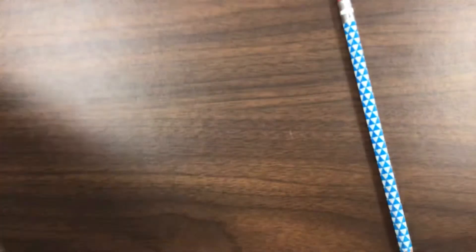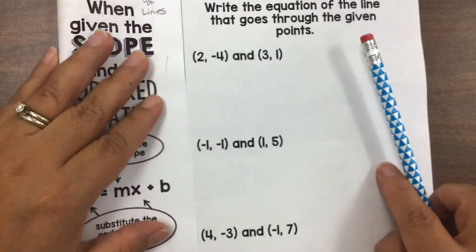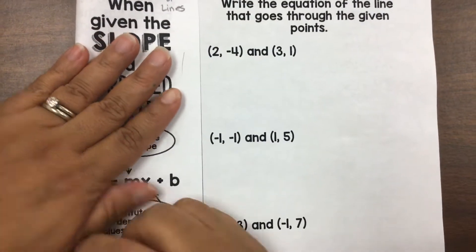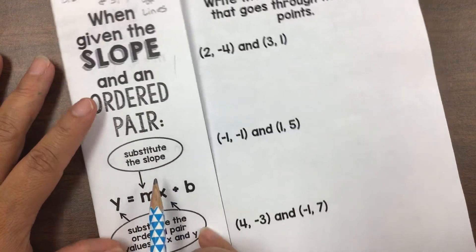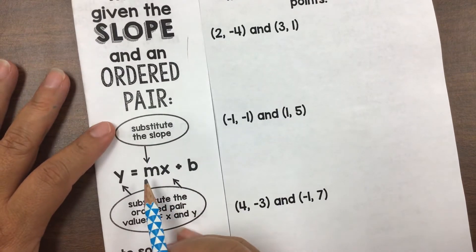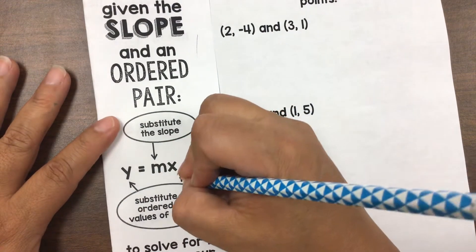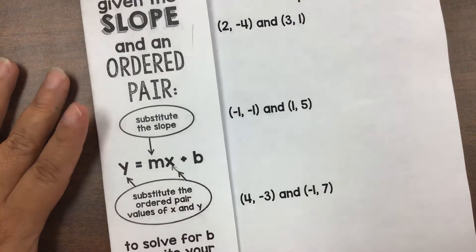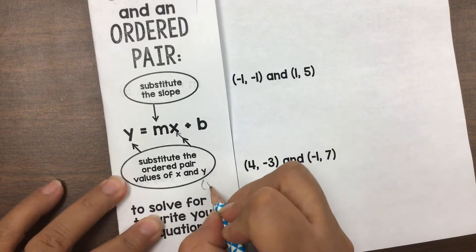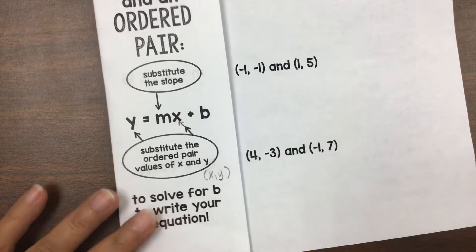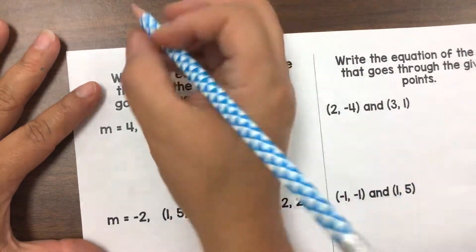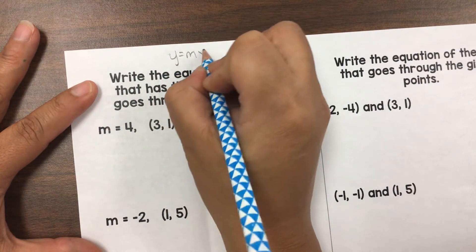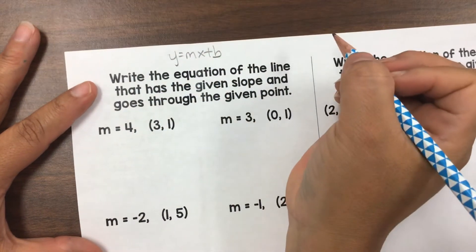We're going to start by folding this towards the middle crease. What it says is when you are given slope and an ordered pair, you substitute in the values of slope and of your x and your y, to solve for b and write your equation. The equation y equals mx plus b is used every time that we write it.